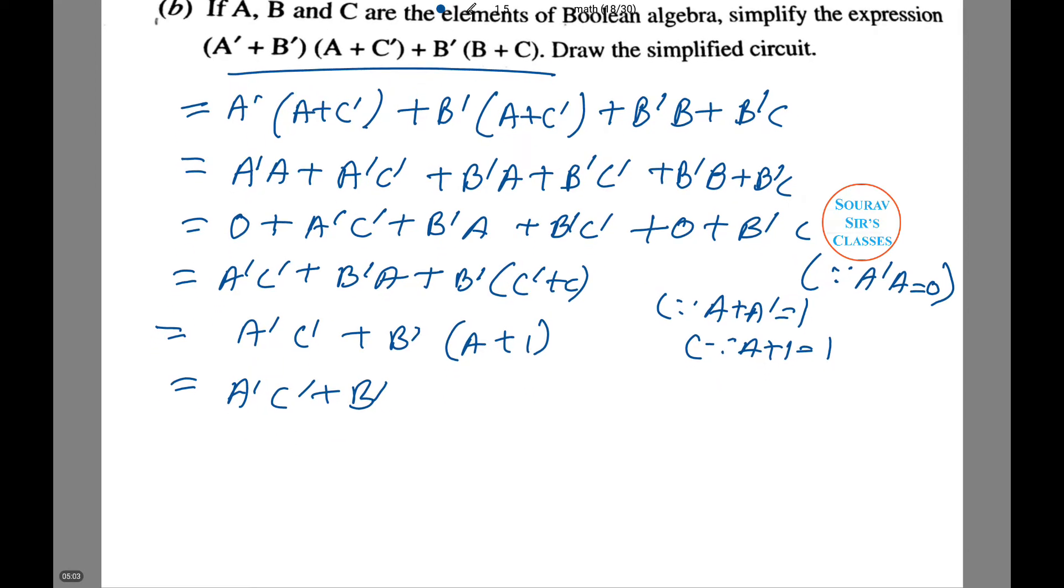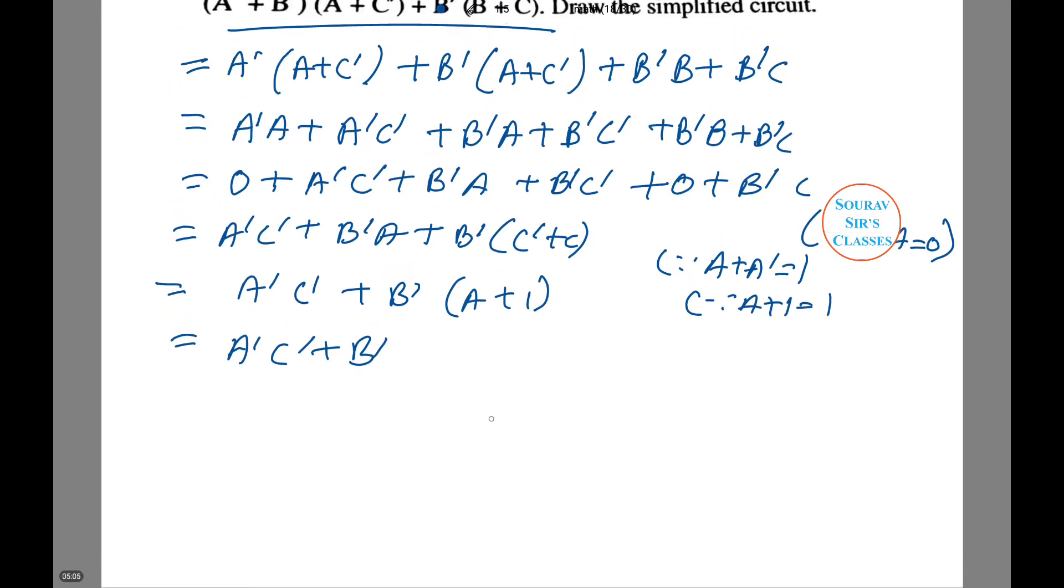That's the simplified expression. The simplified diagram will be A dash C dash in series, this whole in parallel with B dash. Then that's the circuit you have. This is also called the simplified circuit which is important to remember.